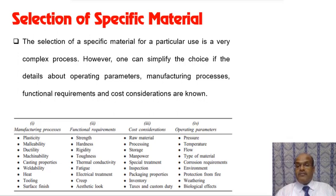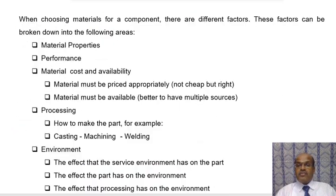Operating parameters refer to the environment in which the material will work — high pressure, temperature, corrosion, weathering, and biological effects. When choosing material for a component, factors are broken down into: material properties and performance, material cost and availability, processing, and environment.